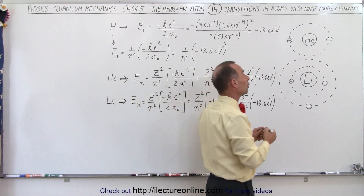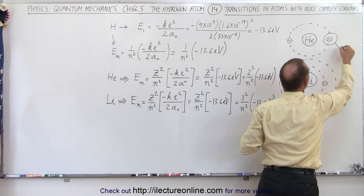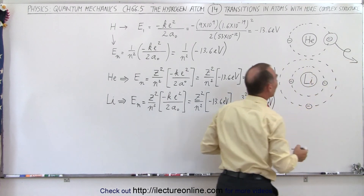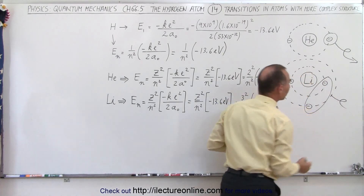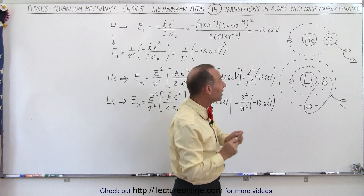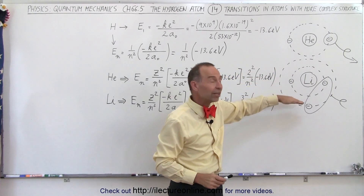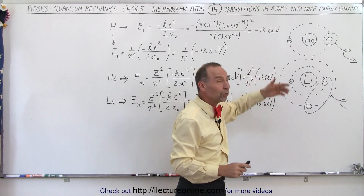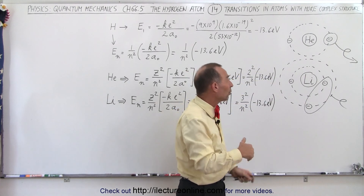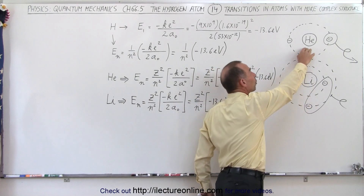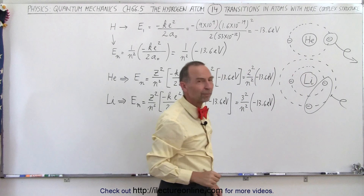However, if we were to remove one of the electrons — for example, if we take an electron and remove it, or take two electrons from lithium and remove them — in other words, if we singly ionize helium and doubly ionize lithium, we now have a situation that looks very familiar, very similar to a hydrogen atom, with the difference that we now have more protons in the nucleus: two for helium and three for lithium.